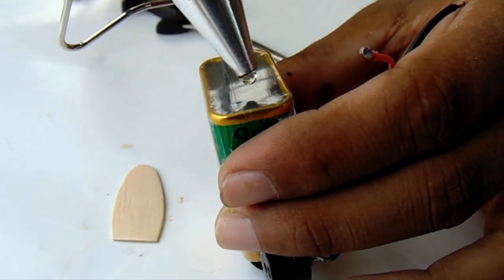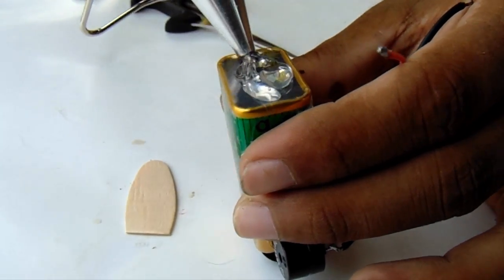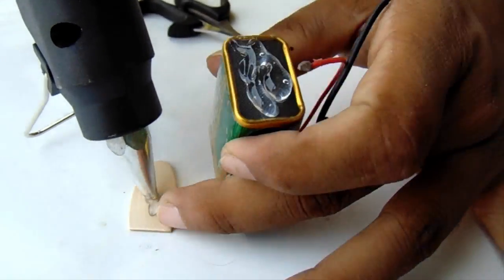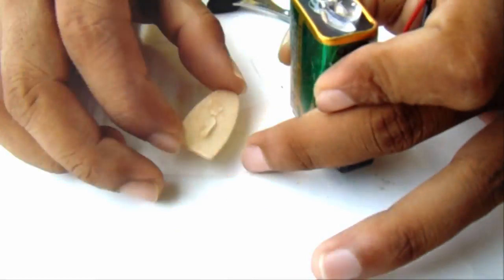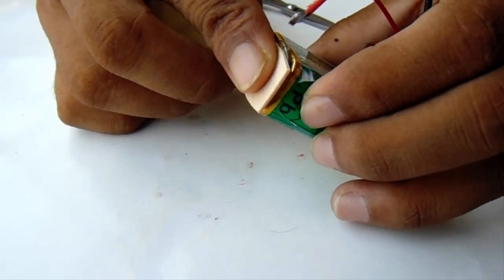Now you need to attach the ice cream stick to the battery. Attach the piece of ice cream stick to the battery.